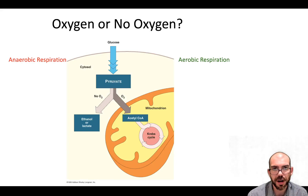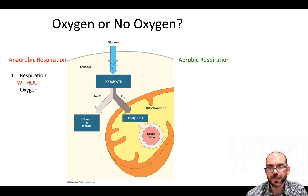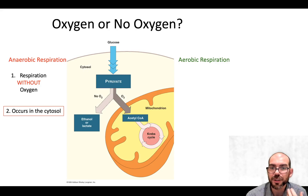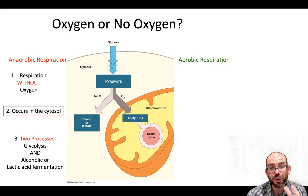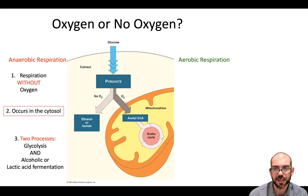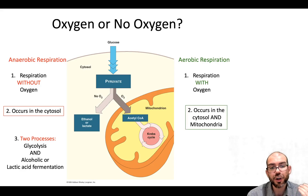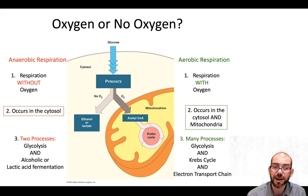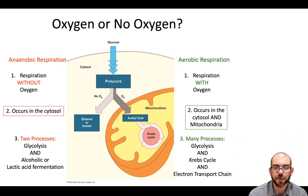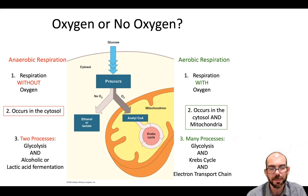For anaerobic respiration — respiration without oxygen — this reaction occurs in the cytosol or cytoplasm of a cell, and it's made up of two primary processes: glycolysis and some kind of fermentation, either alcoholic or lactic acid. For aerobic respiration — respiration with oxygen — this occurs in both the cytosol and the mitochondria. Glycolysis still occurs out in the cytosol, but after that step we have many more things, such as the Krebs cycle and the electron transport chain, which occur within the folds of the mitochondria.